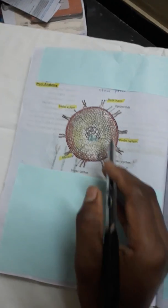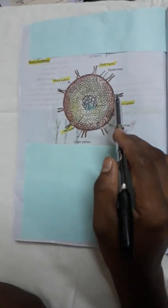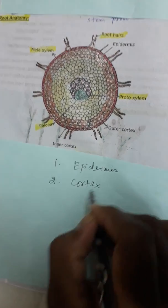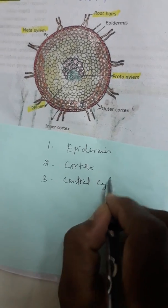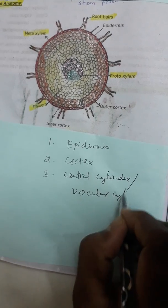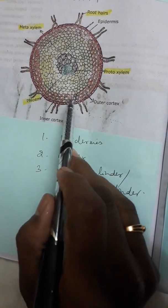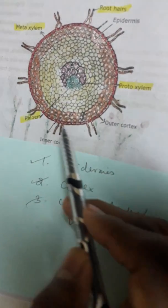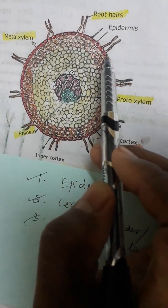The TS (transverse section) of root shows three parts: epidermis, cortex, and central/vascular cylinder. The epidermis is a single cell thick layer with no intercellular spaces. One identification character is that two roots originate from a single cell. Beneath the epidermis is the cortex, divided into two regions — outermost cortex and innermost cortex.